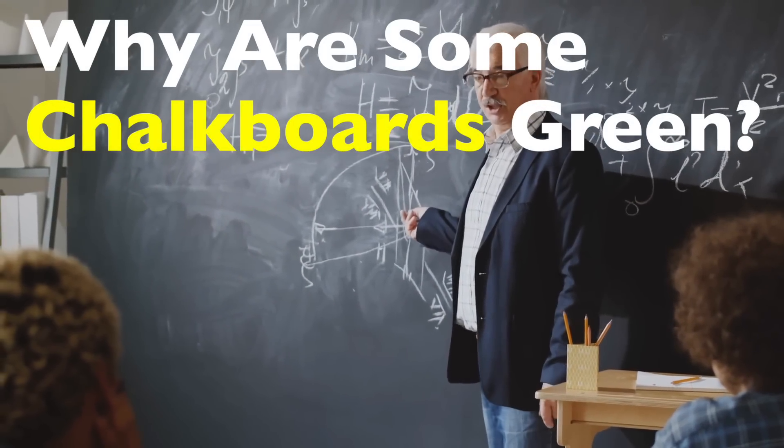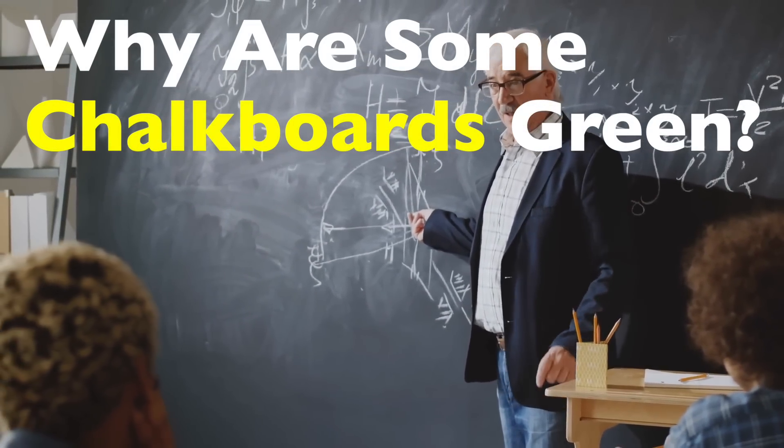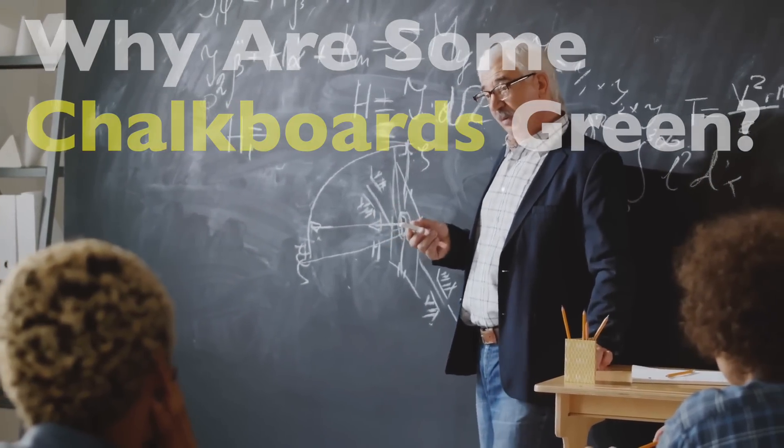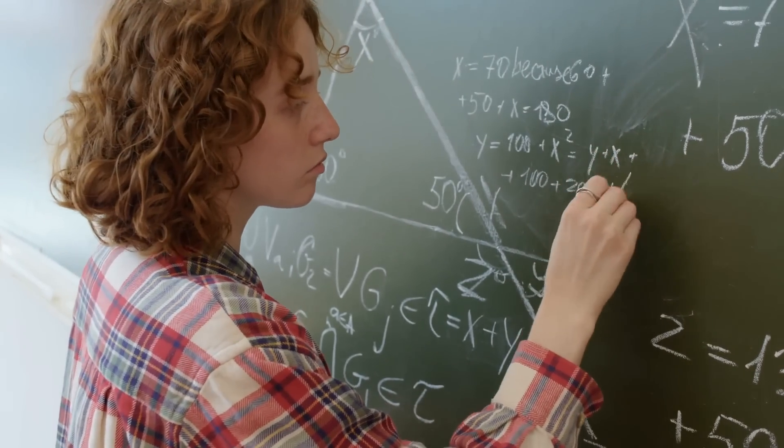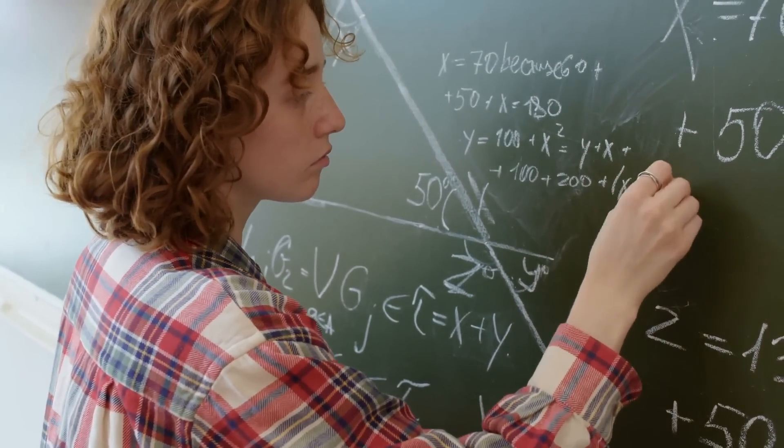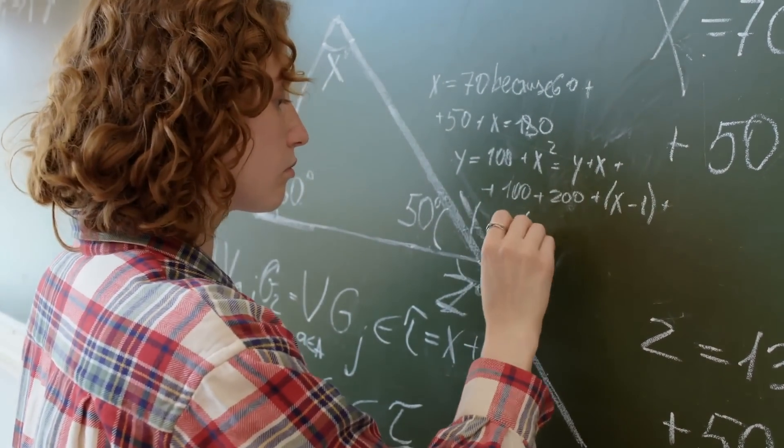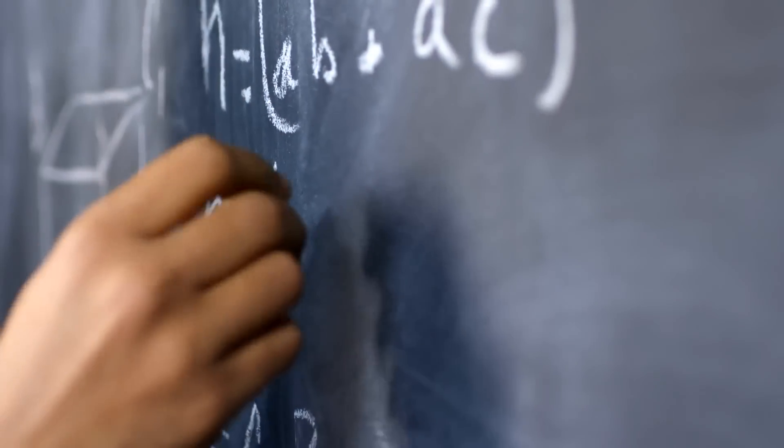If you've been in a classroom or even watched a movie set in a school, chances are you've seen a chalkboard. But did you ever stop and wonder why some chalkboards are green? For decades, they were black, hence the name Blackboard. So when and why did this color change happen?